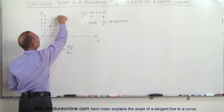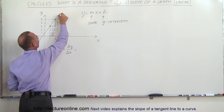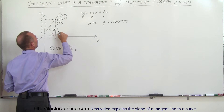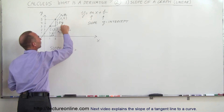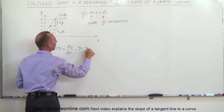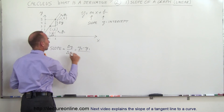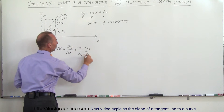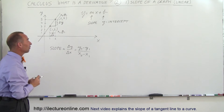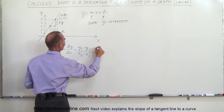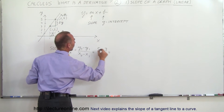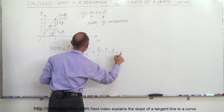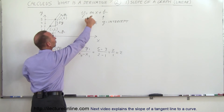If this point is x₂ and y₂, and these two values are x₁ and y₁, then the change in y is simply y₂ minus y₁, and we write y₂ minus y₁ divided by x₂ minus x₁. That ratio gives us the slope. Plugging in the values: 5 minus 3 divided by 2 minus 1, which is 2 divided by 1, which equals 2. So the slope of the function is 2.